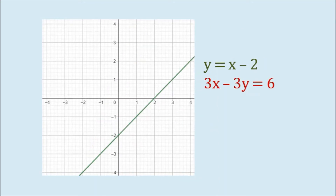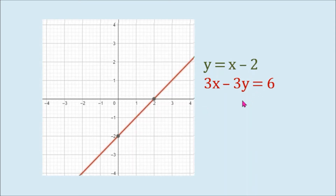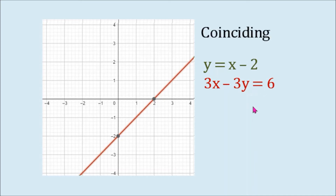I have here the graph of y equals x minus 2. Its slope is 1 and its y-intercept is negative 2. And I also have here the graph of 3x minus 3y equals 6. Each graph actually coincides with the graph of y equals x minus 2. So this is an example of a system of linear equations in two variables whose graphs are coinciding. And because they are coinciding, there are infinite solutions.